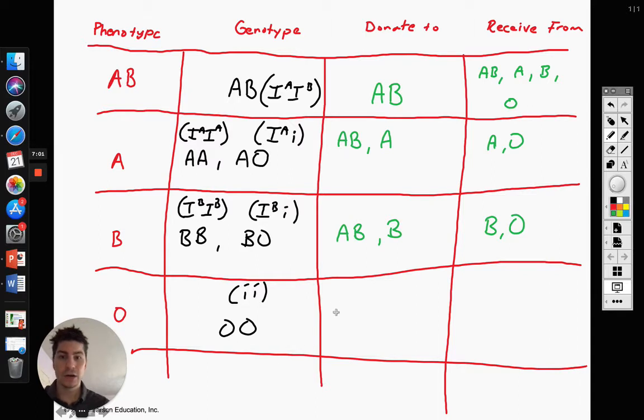And then lastly, O. O is really nice blood type because it can donate to AB, A, B, and O. It can donate to all blood types. Same thing up here with AB, it can receive from all blood types. O can only receive from O. So yeah, if you're O, it's kind of hard to get blood, right? So there's a good chart for you guys on everything with blood typing.